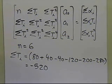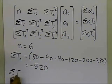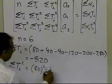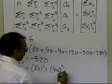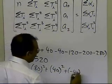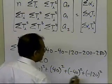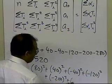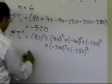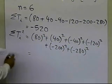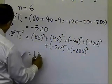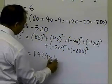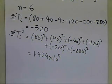Now let's find the summation of all ti squared values: 80² + 40² + (−40)² + (−120)² + (−200)² + (−280)². This value turns out to be 1.424 times 10 to the power 5. That's what you get by summing all the ti squared values.